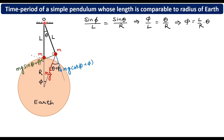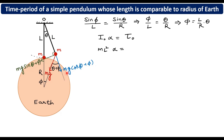We apply torque equals I times alpha, with the pendulum oscillating about point O. So I about O times alpha equals torque about O. The moment of inertia about O is mL squared, since all mass is at the bob. The tension passes through O so it causes no torque. The component mg cos(theta plus phi) also causes no torque. All the torque is caused by mg sin(theta plus phi), with perpendicular distance L, giving net torque equal to mg sin(theta plus phi) times L.